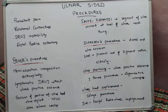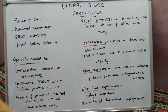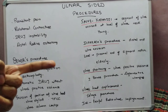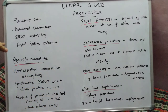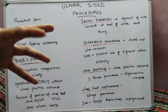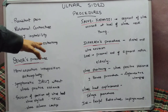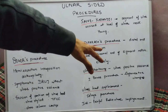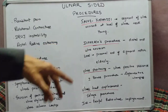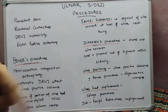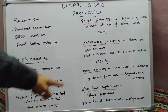The ulnar shortening procedure is indicated where there is positive ulnar variance. It can also be done in association with distal end radius osteotomy. About 7 mm of height can be gained from the distal end radius osteotomy, but if there is still positive ulnar variance after osteotomy, we proceed with ulnar shortening, where transverse cuts are made at the level of the diaphysis and a compression plate is applied.